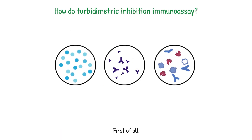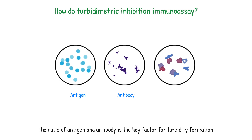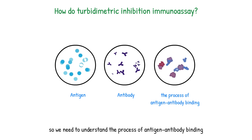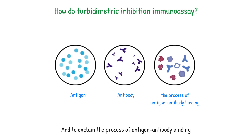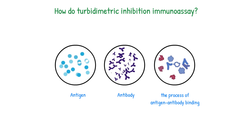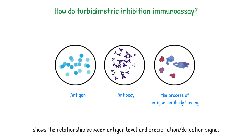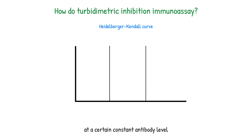The ratio of antigen and antibody is the key factor for turbidity formation, so we need to understand the process of antigen-antibody binding. To explain this process, the most classic model is the Heidelberger-Kendall curve, which shows the relationship between antigen level and precipitation/detection signal at a certain constant antibody level.